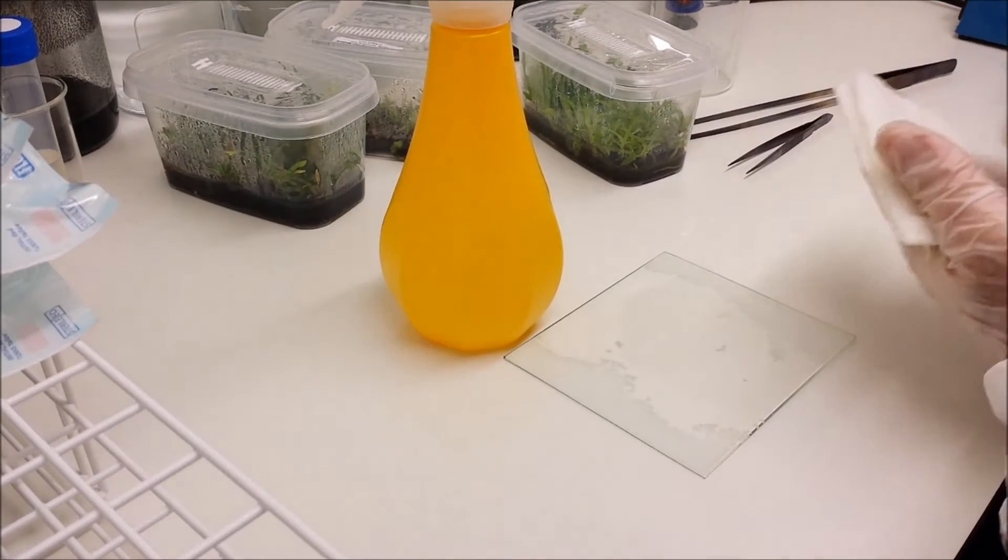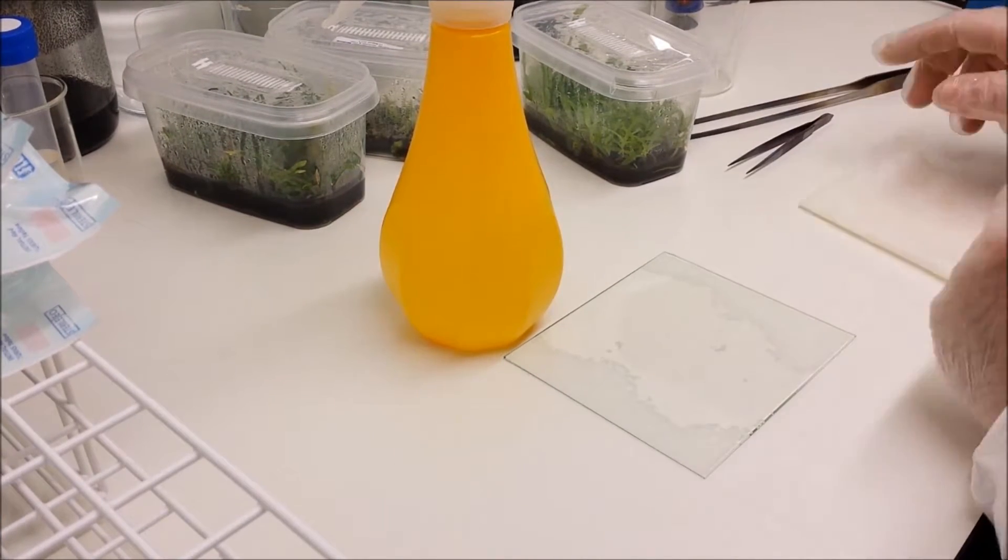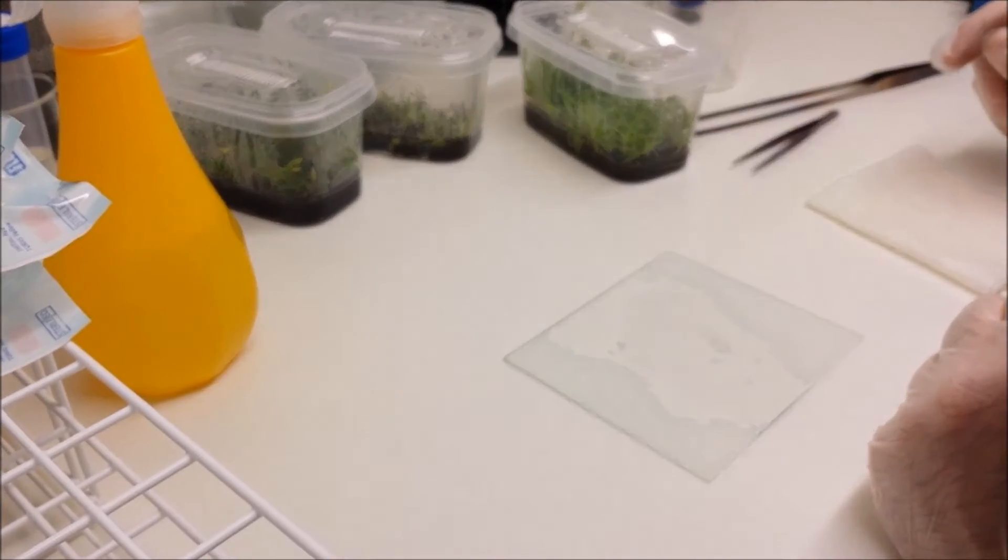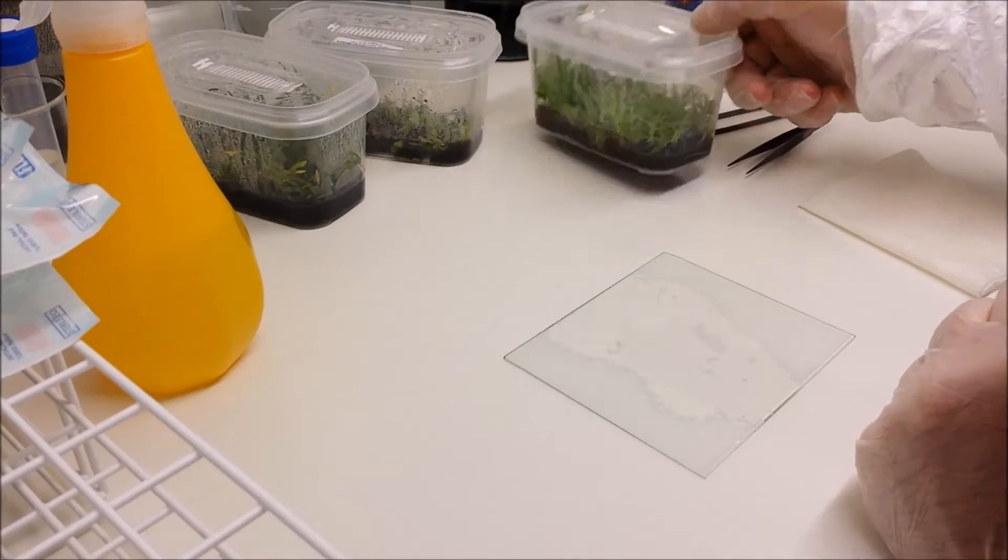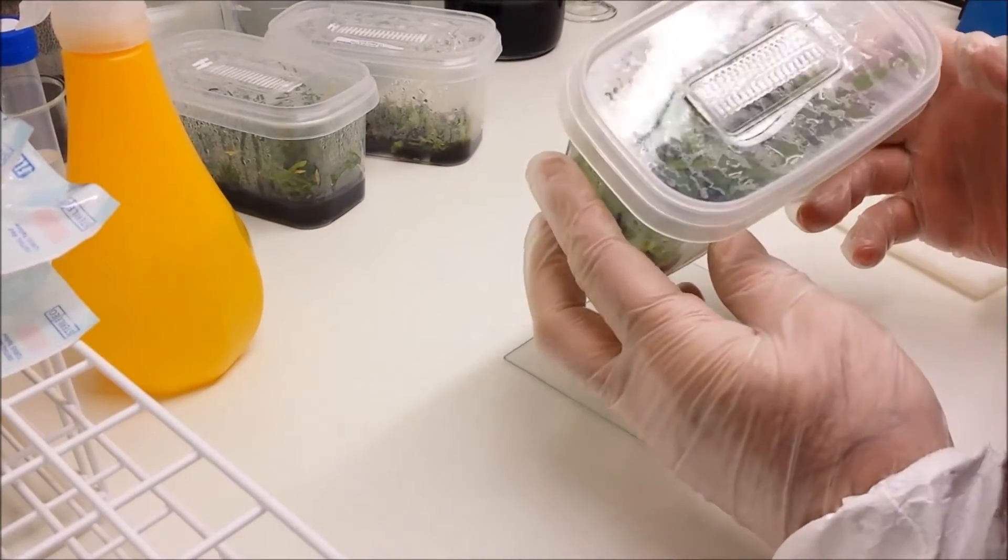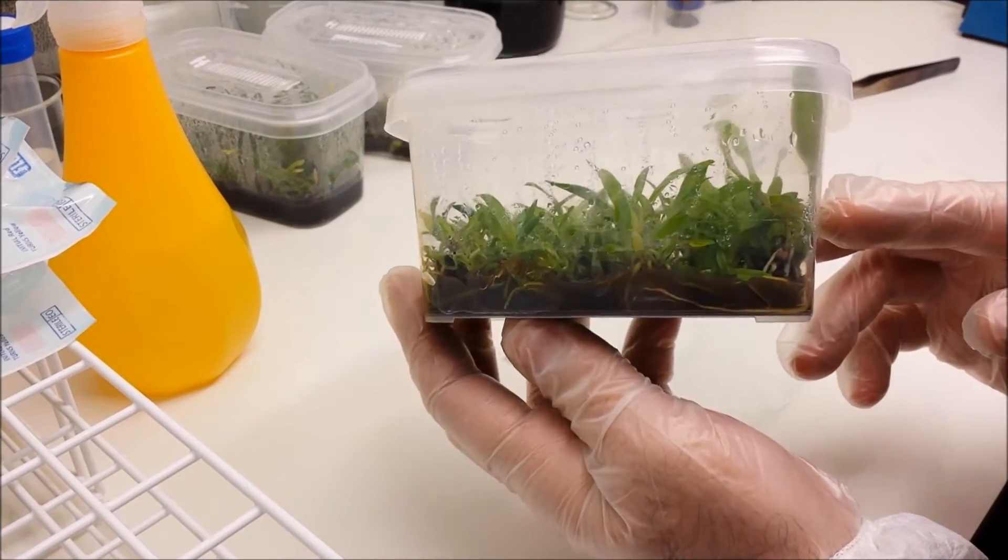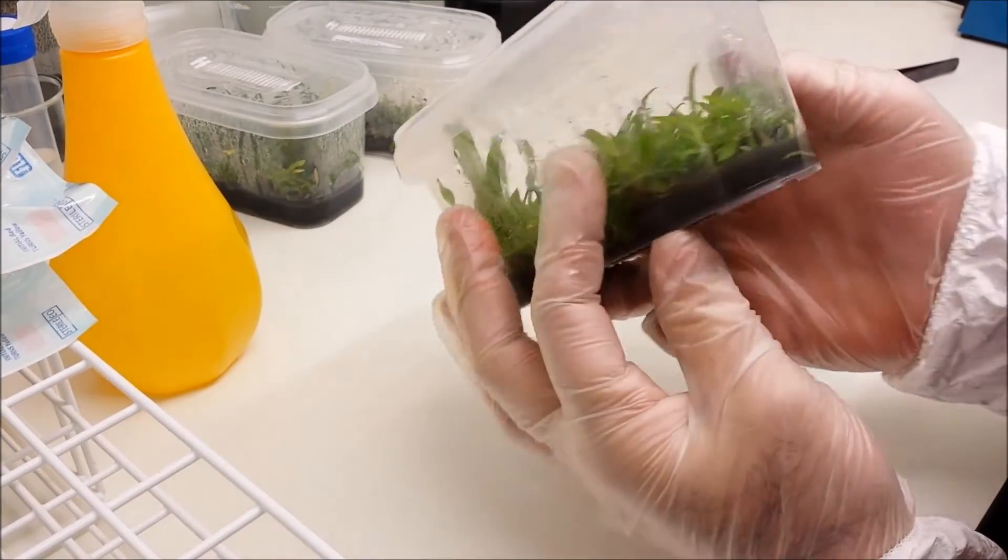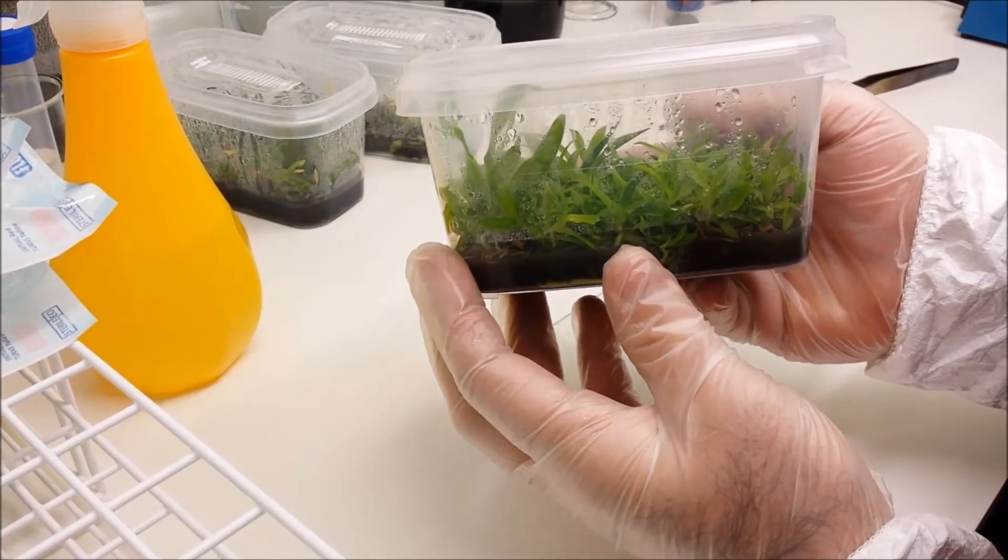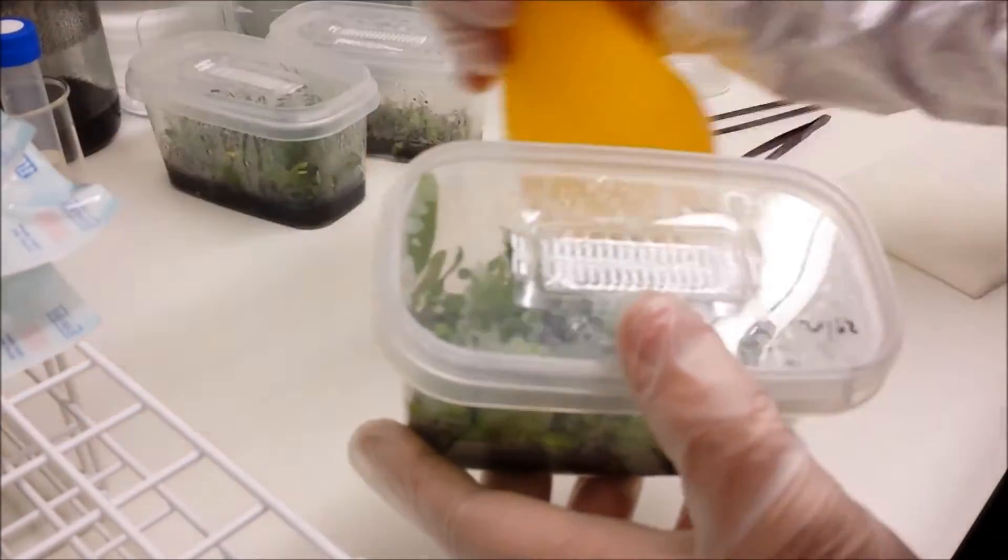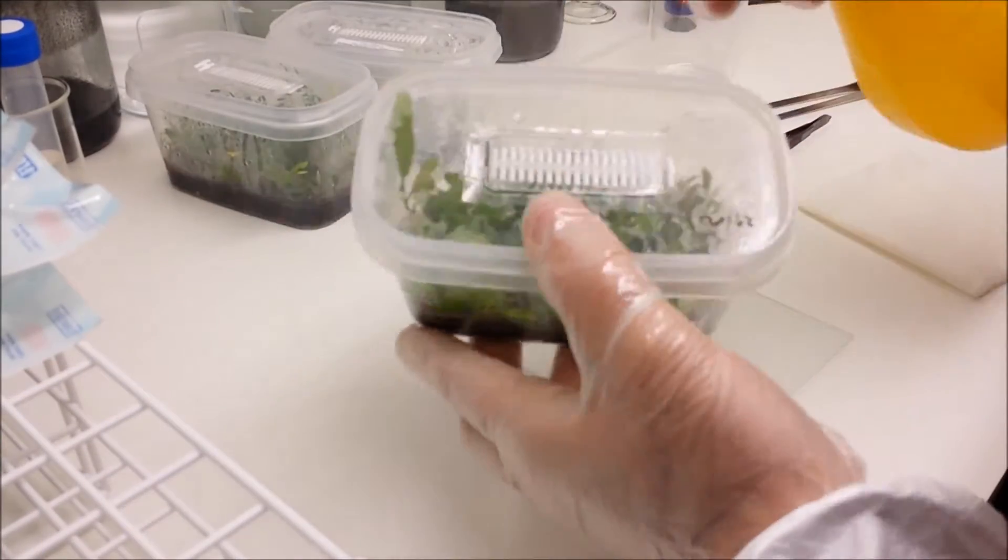And today what we're going to be using, we're going to be deflasking and replating some Cattleya genmanii, which is a lovely five inch flowered plant from Guyana and Venezuela. As you can see these are lovely healthy seedlings. They're around about an inch, inch and a half tall. And this is what we call a mother flask. And in this flask will be probably something like a hundred plants.